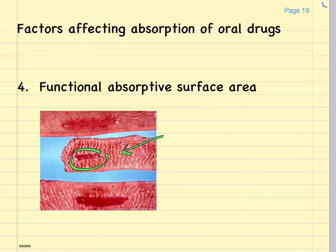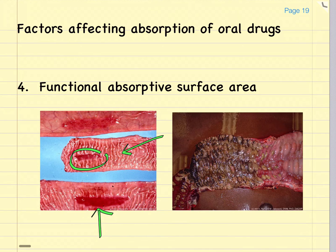Maybe this is not such a big deal with a few little areas here and there. However, in an intestinal tract that has very large areas of damage, such as this equine large colon, which has been actually damaged by drugs themselves — non-steroidal anti-inflammatory drugs — you can see how there is very little absorptive surface area left.